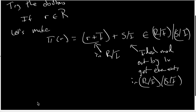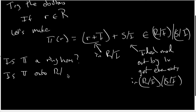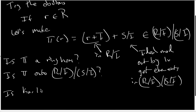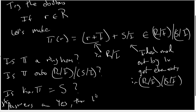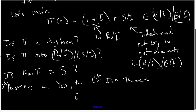We'll leave this video with the following questions. Because if the answers to all of these are yes, then the first isomorphism theorem will let us conclude that R mod the kernel of π — which would be S — is isomorphic to the target ring. We'll investigate the proof in the next video.